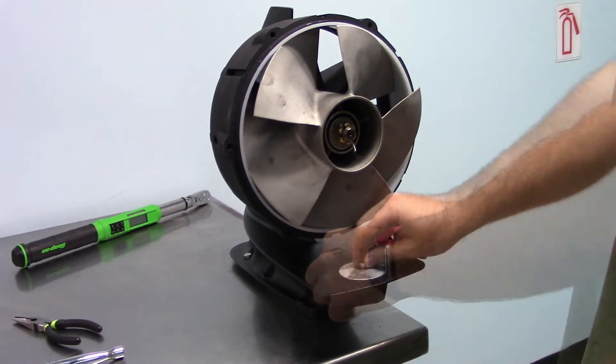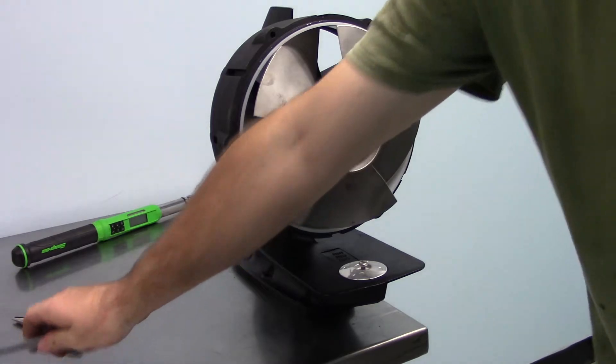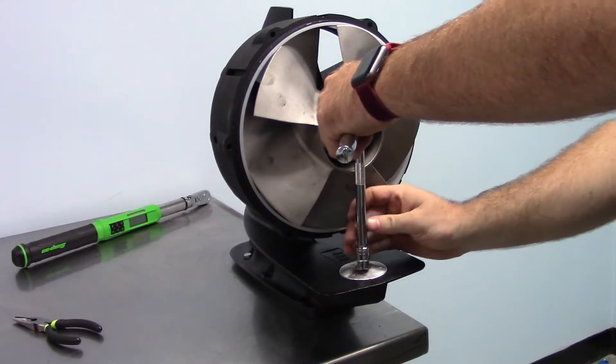Install the modified trim tab anode using the 10 millimeter bolt from the original anode.